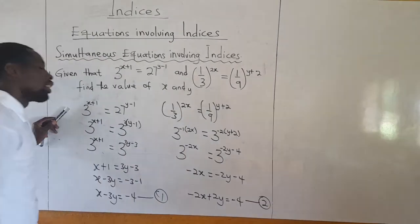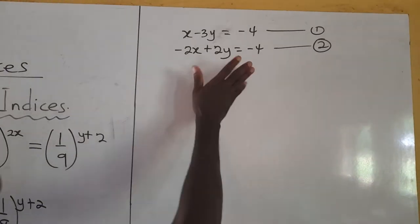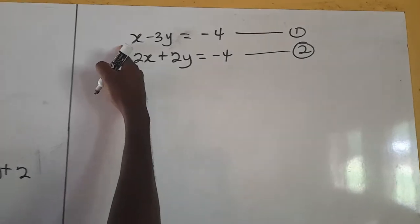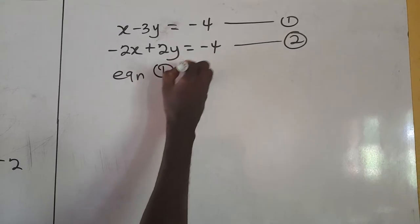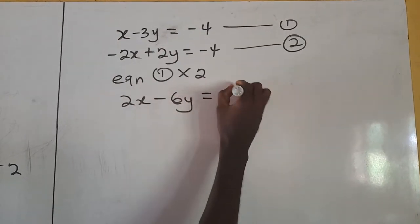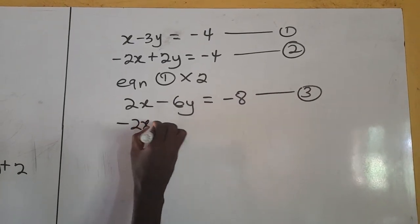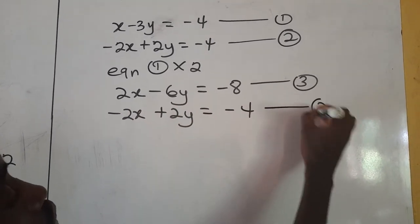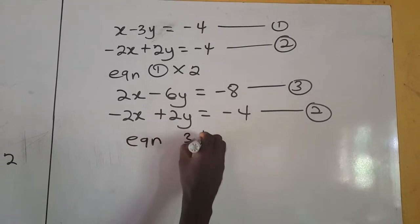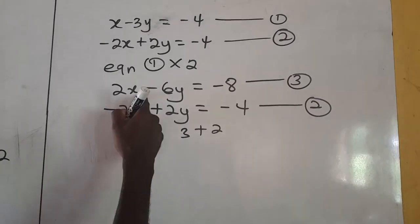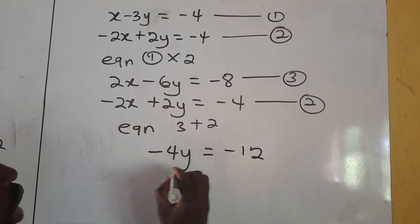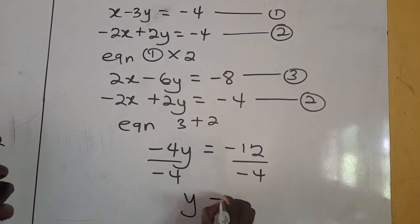Now I'll solve equation 1 and equation 2 simultaneously by elimination. I'll multiply equation 1 by 2 to make the coefficient of x equal to 2. Equation 1 times 2 gives: 2x minus 6y equals negative 8 as equation 3. And equation 2 is negative 2x plus 2y equals negative 4. The coefficients of x are now 2 and negative 2, so I add them. Equation 3 plus equation 2: 2x plus negative 2x is 0. Negative 6y plus 2y is negative 4y. And negative 8 plus negative 4 is negative 12. Dividing both sides by negative 4, my y equals 3.